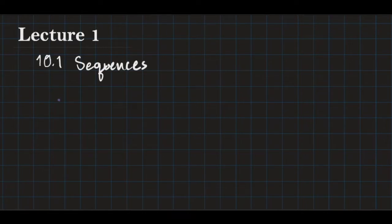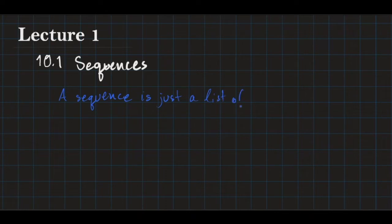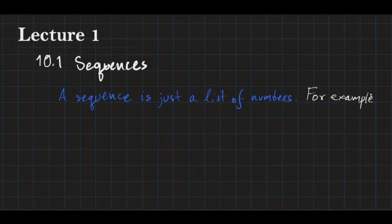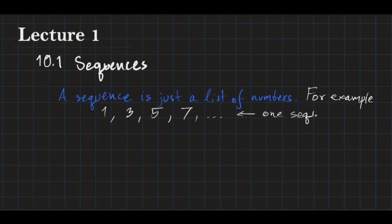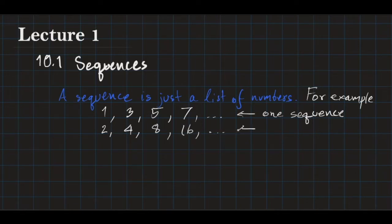What is a sequence? A sequence is just a list of numbers. For example, you can have something like 1, 3, 5, 7, and so on — this is one sequence. Or you can have something like 2, 4, 8, 16, and so on — this is another sequence.